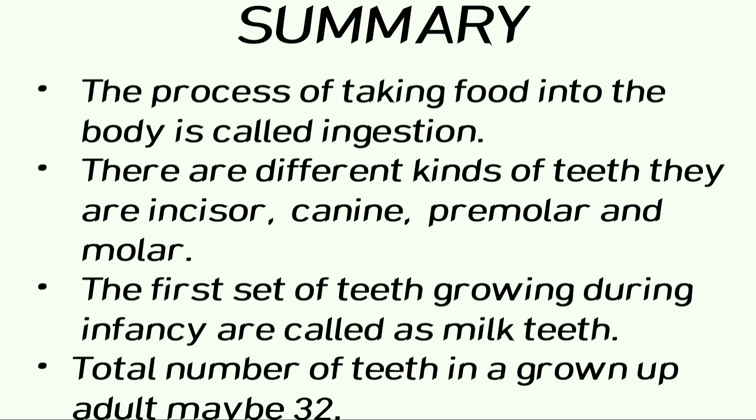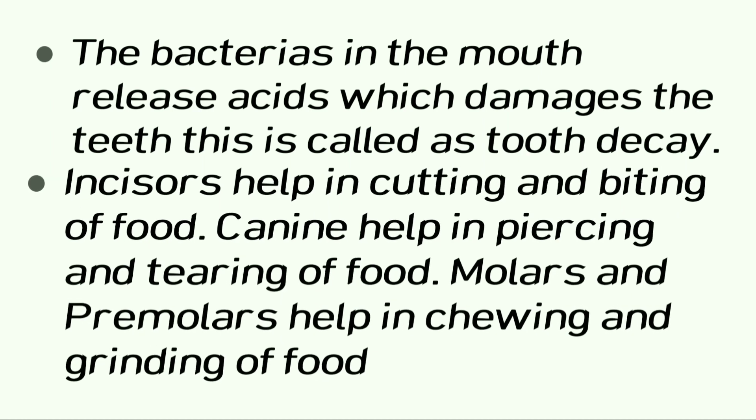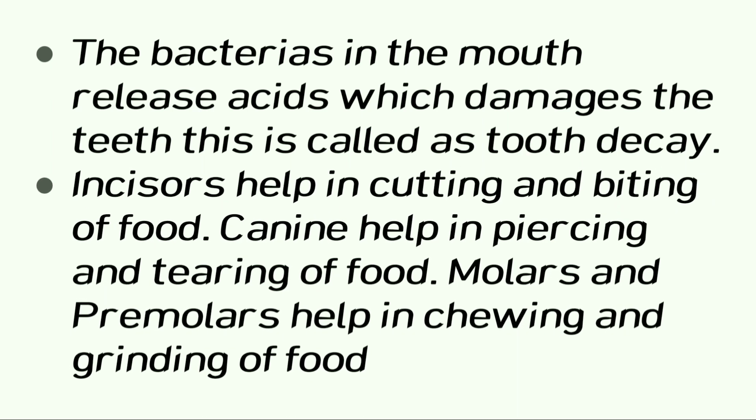Now let us take a quick look at the summary points. The process of taking food into the body is called ingestion. There are different kinds of teeth: incisors, canines, premolars and molars. The first set of teeth growing during infancy are called milk teeth. The total number of teeth in a grown-up adult may be 32. The bacteria in the mouth release acids which damage the teeth — this is called tooth decay. Incisors help in cutting and biting, canines help in piercing and tearing, and molars and premolars help in chewing and grinding of food.